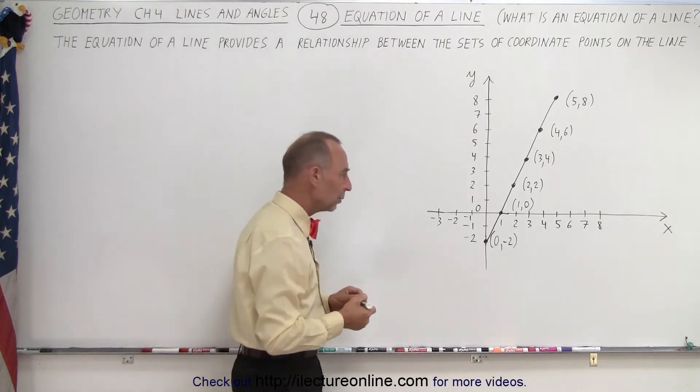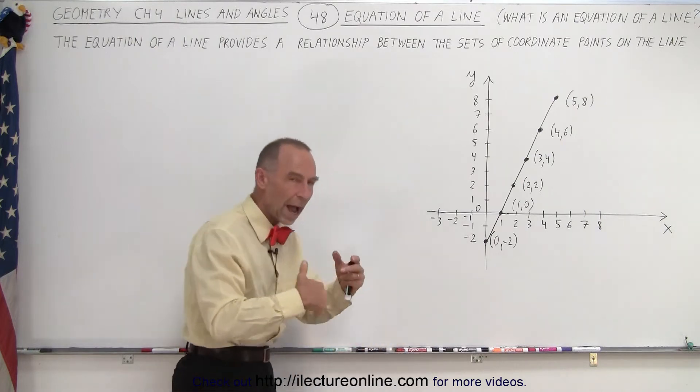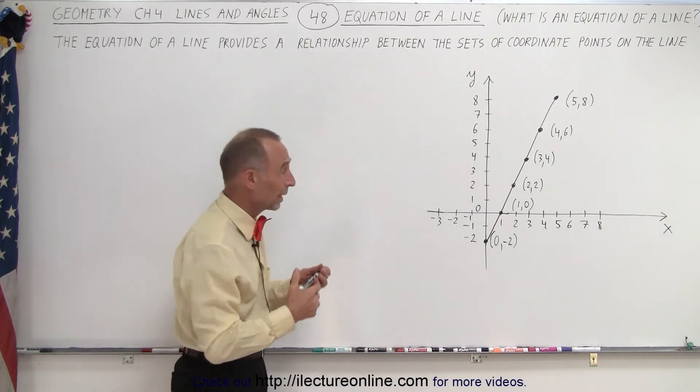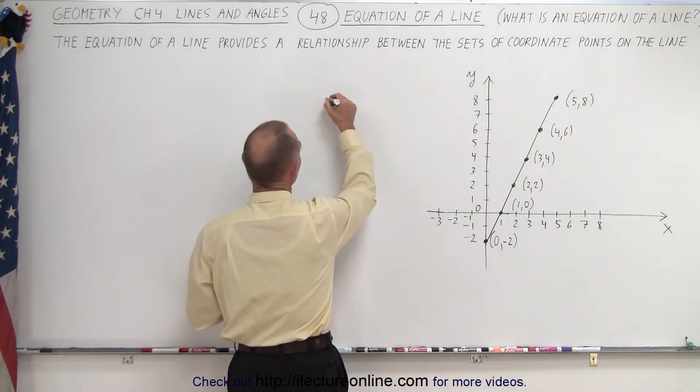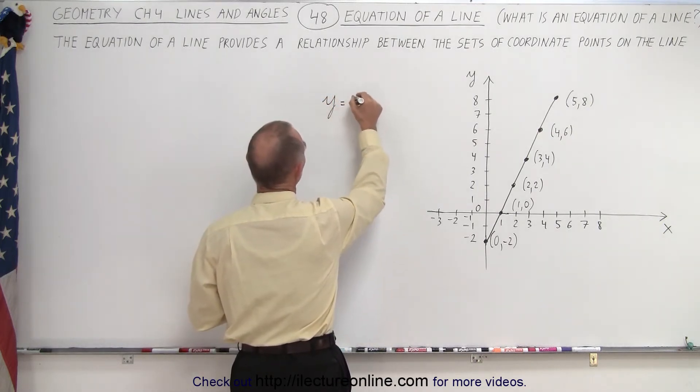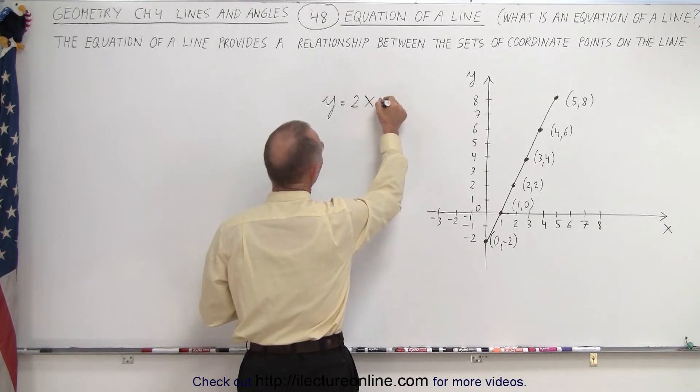So how do we do that? Well it turns out we'll show you how to come up with the equation later. Right now we're just going to give you an equation and the equation is going to look like this: y is equal to 2x minus 2.